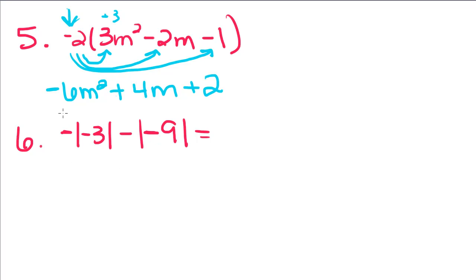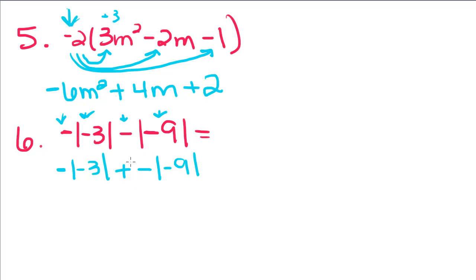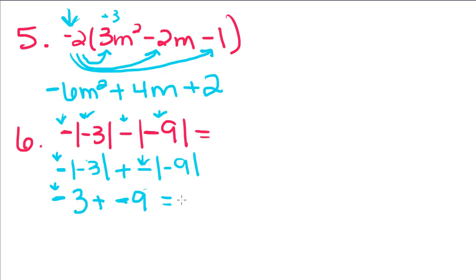Here I have opposite of absolute value minus absolute value. What I want you to realize is that this negative can be written as plus the absolute value of negative 9. So this tells me I'm going to take the opposite of the absolute value of negative 3 and the opposite of the absolute value of negative 9. The absolute value of negative 3 is positive 3, but I have this opposite out front. Plus the opposite of the absolute value of negative 9, which is 9. So I have negative 3 plus negative 9, which gives me negative 12.